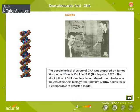The structure of DNA is comparable to a twisted ladder. This double helical structure was proposed jointly by James Watson and Francis Crick in 1953.